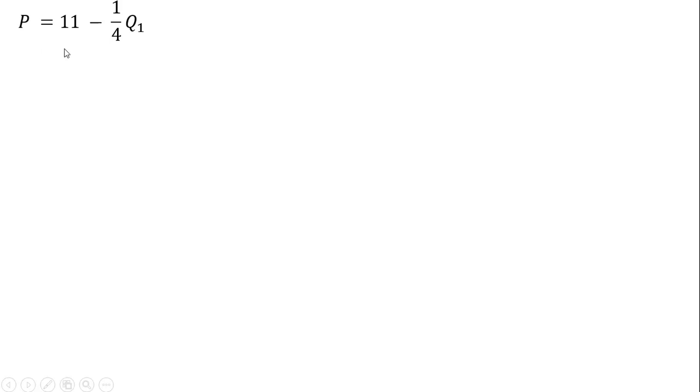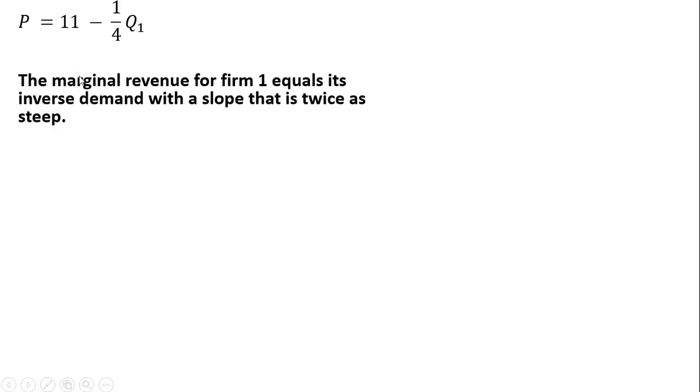Rewriting the last result, we now want to get the marginal revenue for Firm 1. The marginal revenue for Firm 1 equals its inverse demand with a slope that is twice as steep. We multiply what's in front of the Q subscript 1 term by 2, so 2 times 1/4 is 1/2.